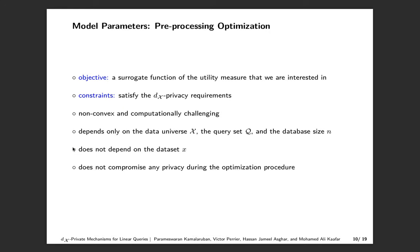The model parameters c and q' are chosen by approximately solving a preprocessing optimization problem with an objective function that acts as a surrogate for the utility measure of interest. The constraints capture the DX privacy requirements. The exact form of the optimization depends on the utility measure and the DX metric under consideration. In general, these problems are not convex and are computationally challenging, but for certain loss functions the optimization can be approximately solved using heuristic approaches. Note that this preprocessing optimization depends only on the data universe X, the query set Q, and the database size n, but not on the dataset X itself. Thus, we don't compromise any privacy during the optimization procedure.